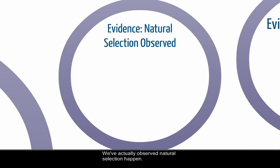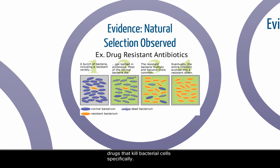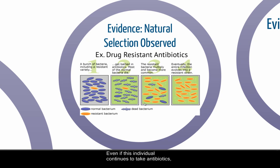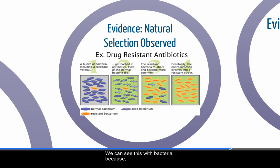We've actually observed natural selection happen. We've seen this with antibiotic resistance in bacteria. You have a whole population of bacteria with genetic diversity. You subject them to antibiotics — drugs that kill bacterial cells — most of them die, but a few survive. Those that survive go on to reproduce. Even if an individual continues to take antibiotics, those resistant individuals will survive, and eventually that antibiotic won't work on that bacteria anymore. The antibiotics themselves are the selective pressure driving the evolution of the species. We can see this with bacteria because they reproduce very quickly.